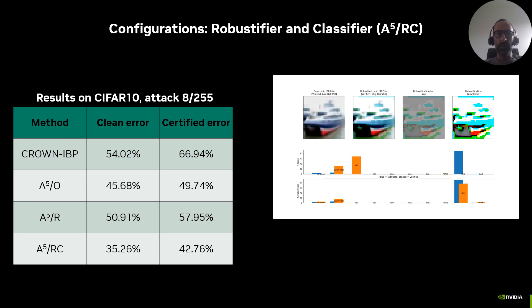Metrics reported in the table show that the co-adaptation of a robustifier and classifier leads to a significant boost in performance, even surpassing A5/O, while the pattern in the defensive augmentation remains similar to that of A5/R with colors and contrast enhanced to increase the robustness of the processed image.